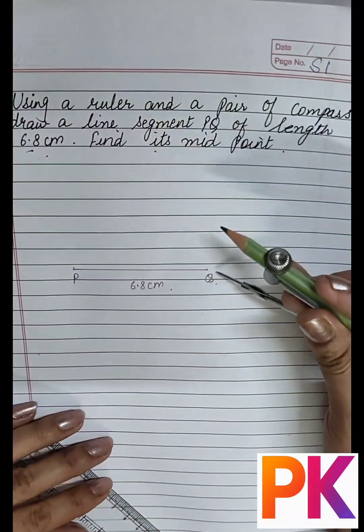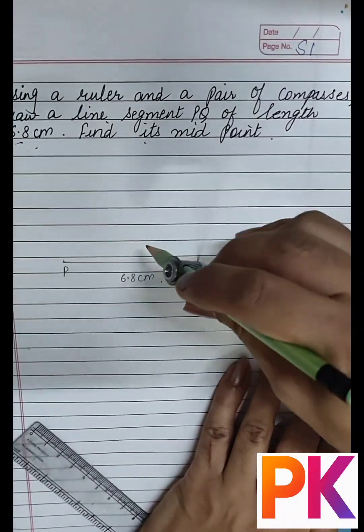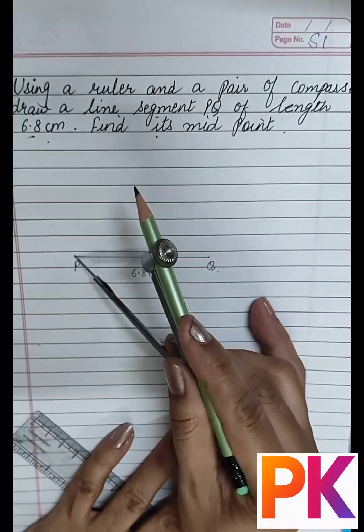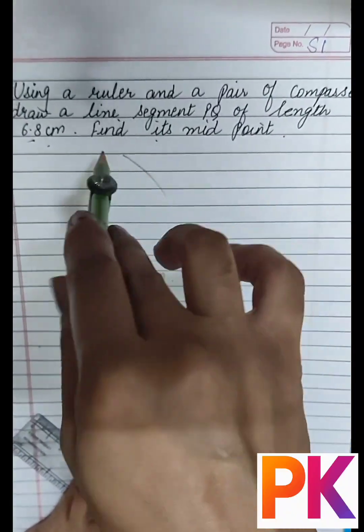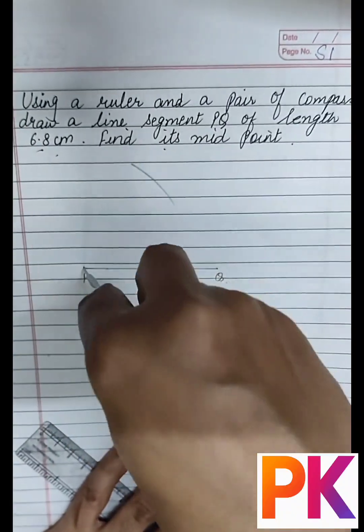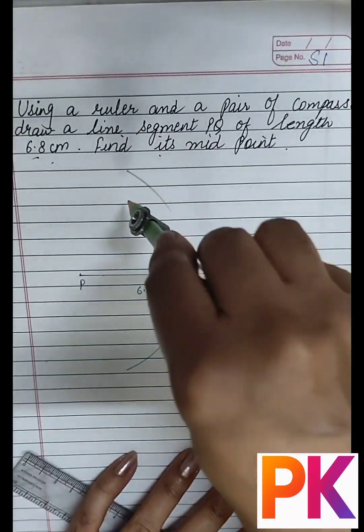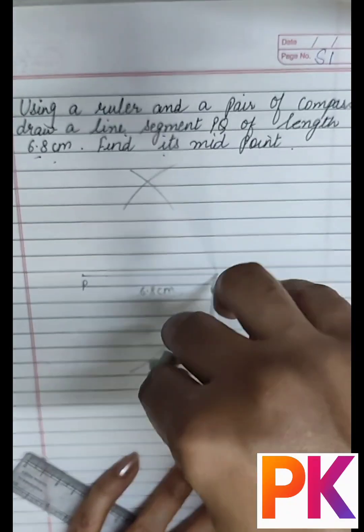For this, open your compass more than half of PQ like this. Now with P as center, draw arcs one upward and one downward like this. Now with Q as center and same radius, draw arcs cutting the previous arcs.